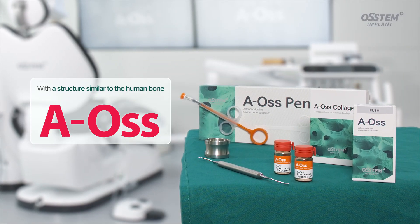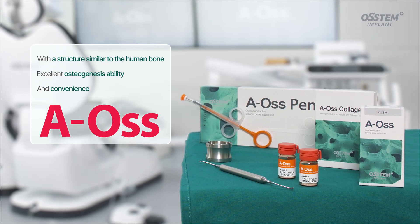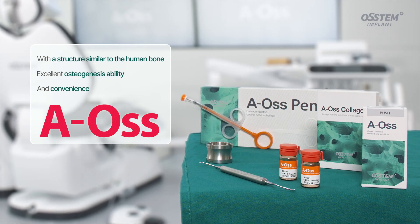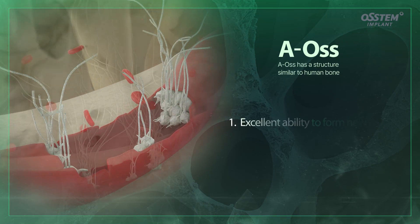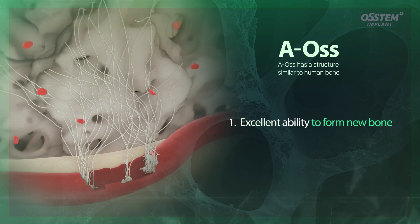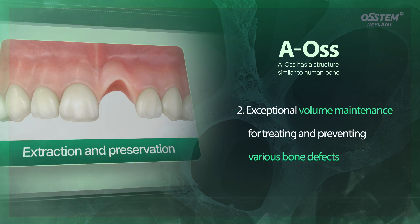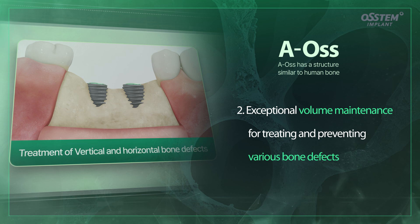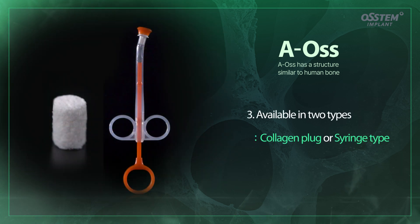In summary, AOS forms new bone rapidly, which can be applied to any surgical sites due to its similarity to human bone. First, AOS has an excellent ability to form new bone. Second, AOS can be used to treat and prevent different bone defects with exceptional volume maintenance. Third, collagen plug or syringe type is available for better treatment options.